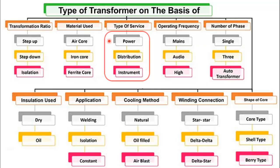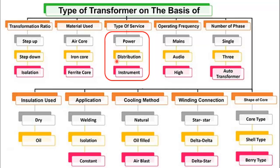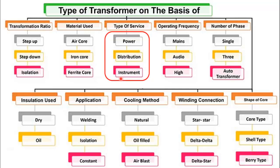These types of transformers are also based on the type of service. We have the power transformer, which is mainly used in the substation. Then comes the distribution transformers, and then the instrument transformers, which include the current transformer and the potential transformer — CT and PT.